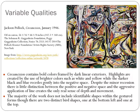The first selection from the Abstract Expressionist period is Circumcision by Jackson Pollock. The chaotic canvas contains bold colors framed by dark linear exteriors. Highlights are created by the use of brighter colors such as white and yellow, while the darker black and blue colors recede gently into the negative space. Despite the minor recession, there is little distinction between the positive and negative space, and the aggressive application of line creates the only real sense of depth and movement. The majority of the work does not include identifiable shapes within the gestured forms, though there are two distinct bird shapes, one at the bottom left and one at the top.